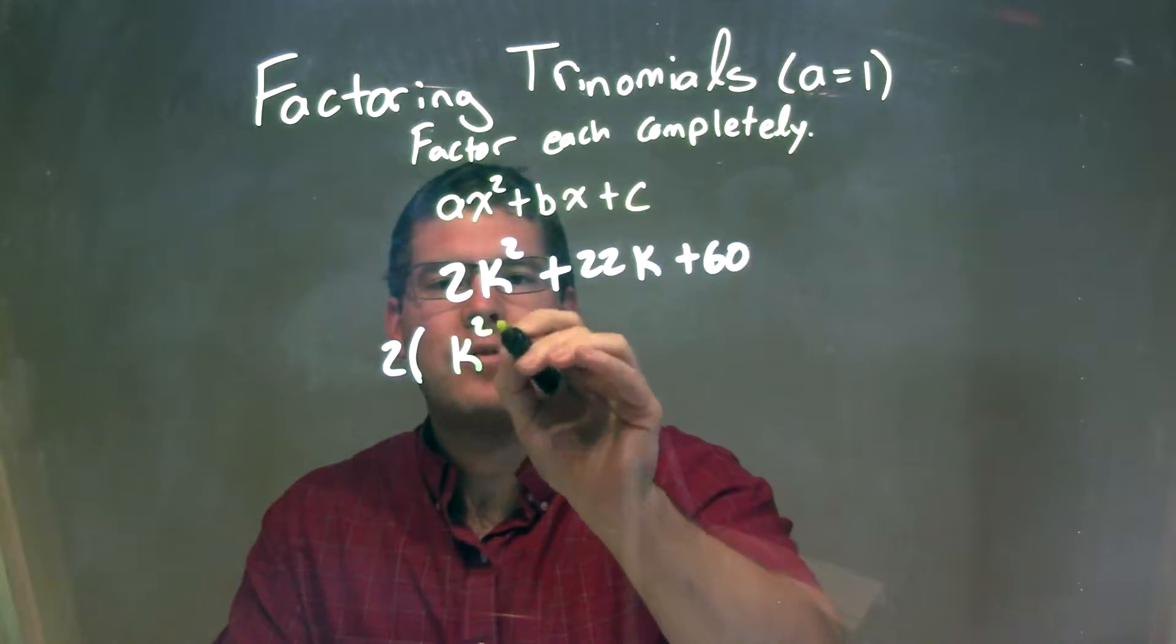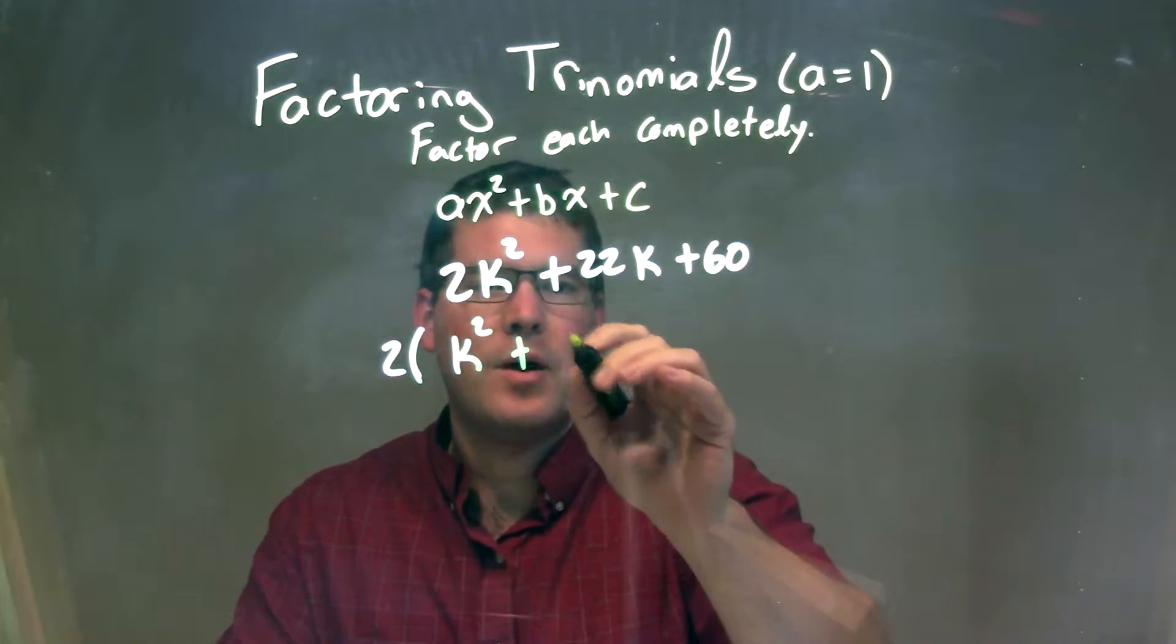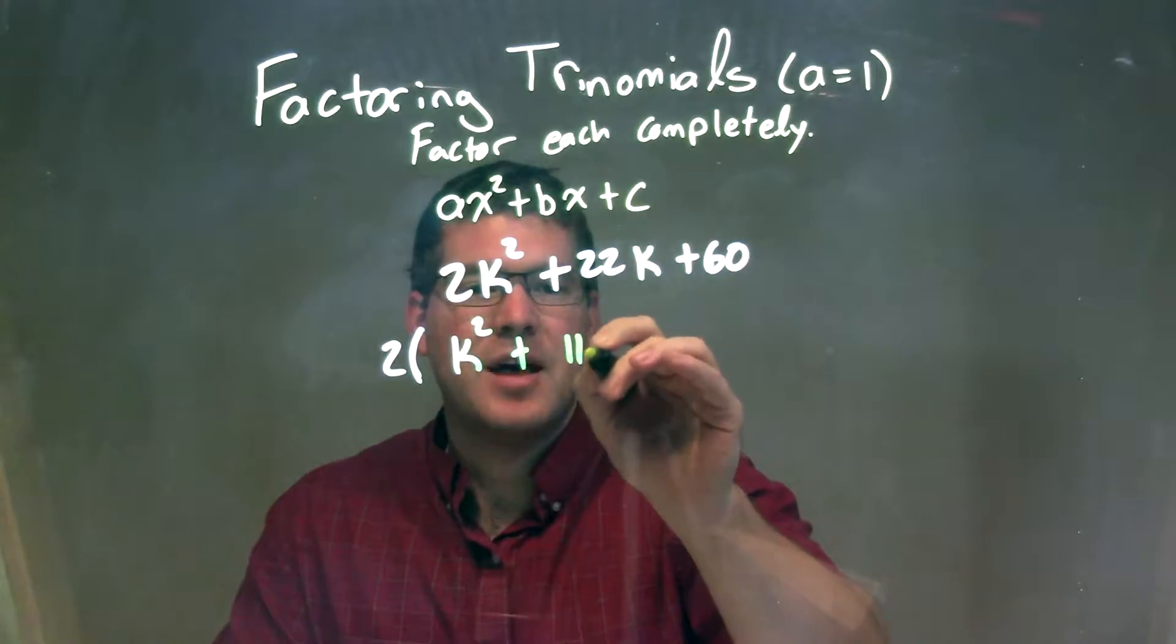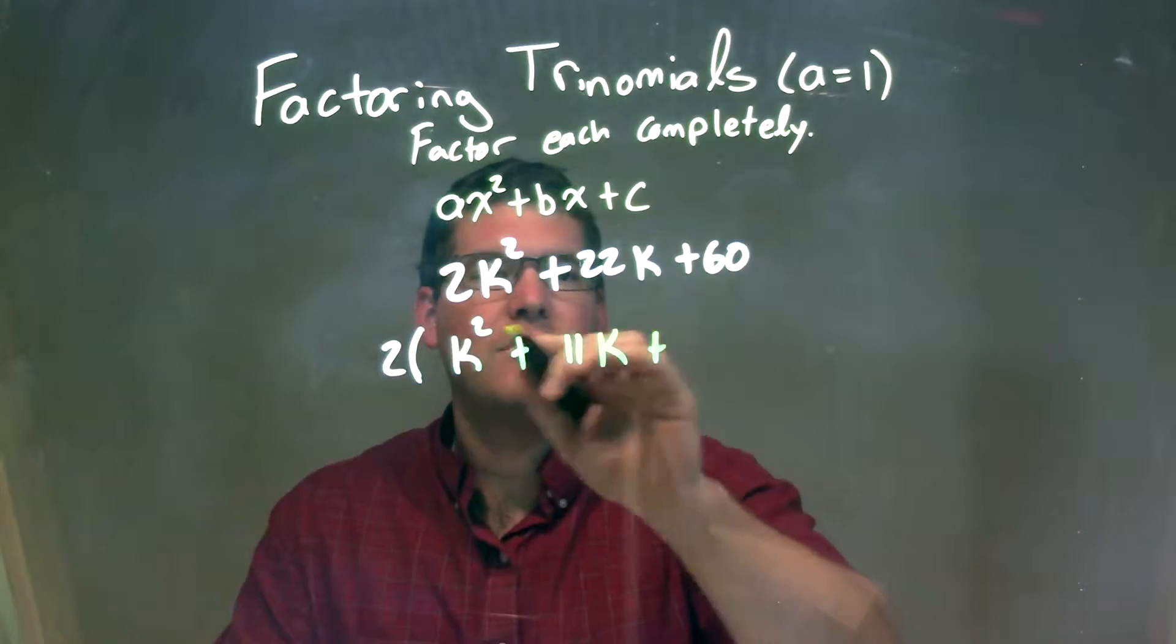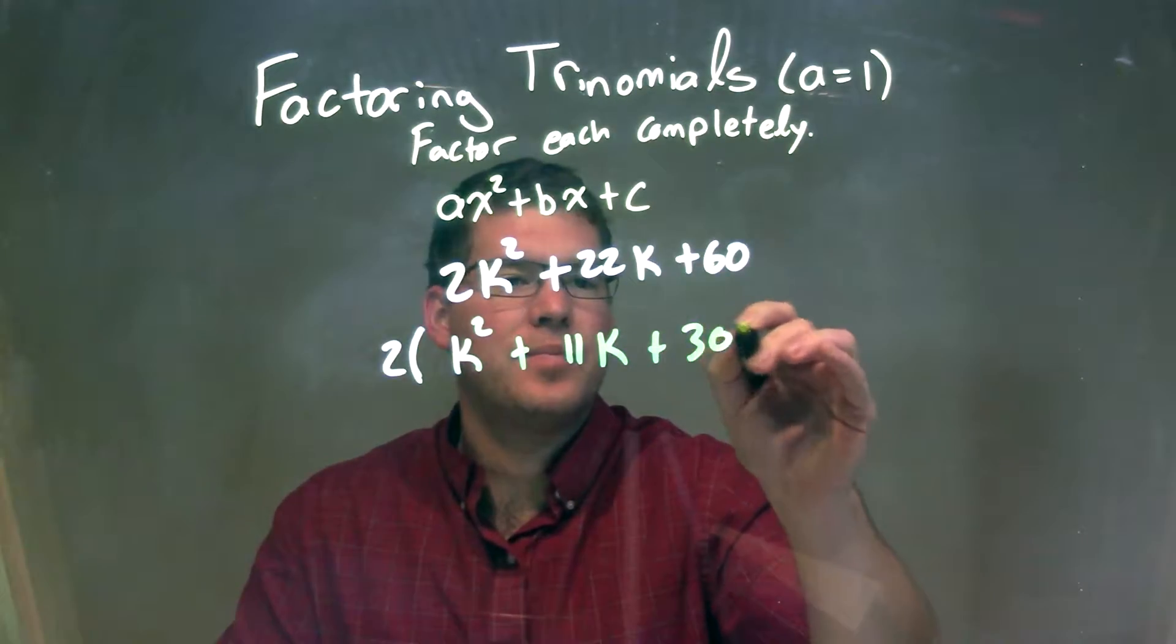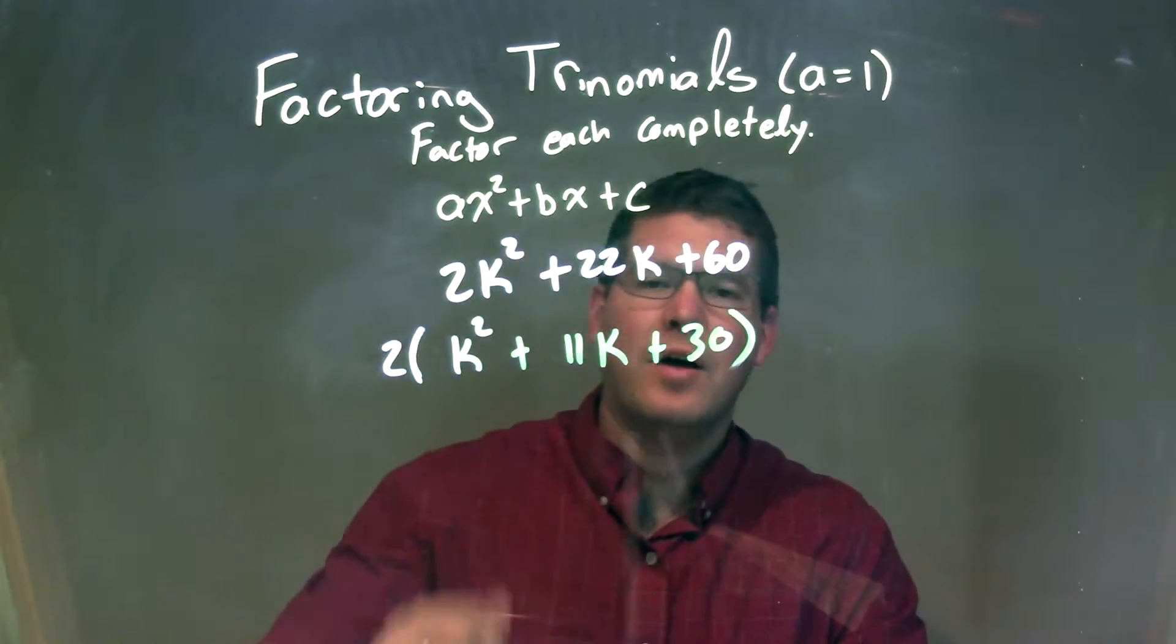So I'm left with k squared out front because 2 divided by 2 is 1, plus 22 divided by 2 is 11. So you have 11k right there, and 2 goes into 60 30 times. So I pulled out a 2 now, and we have an a value of 1.